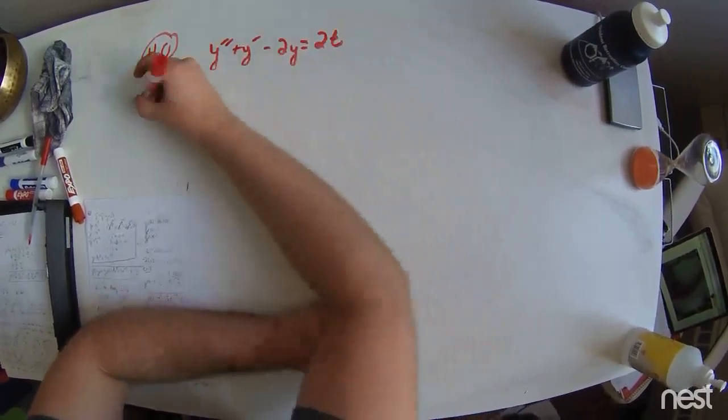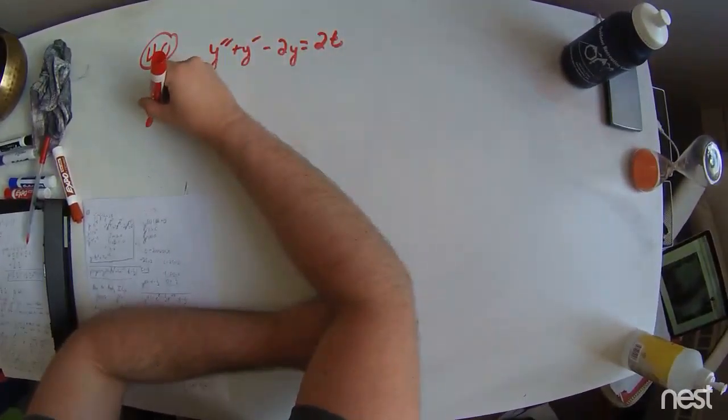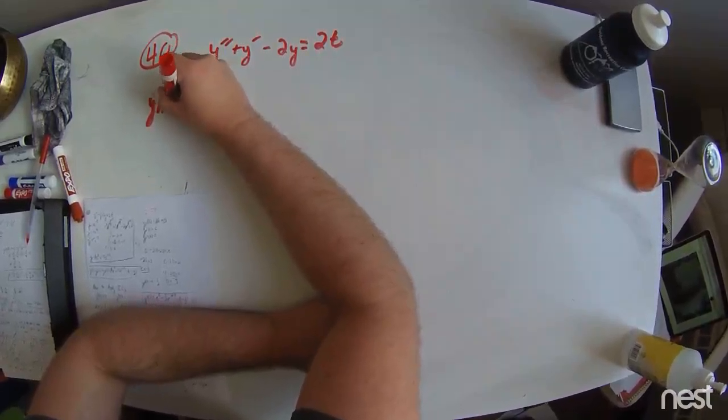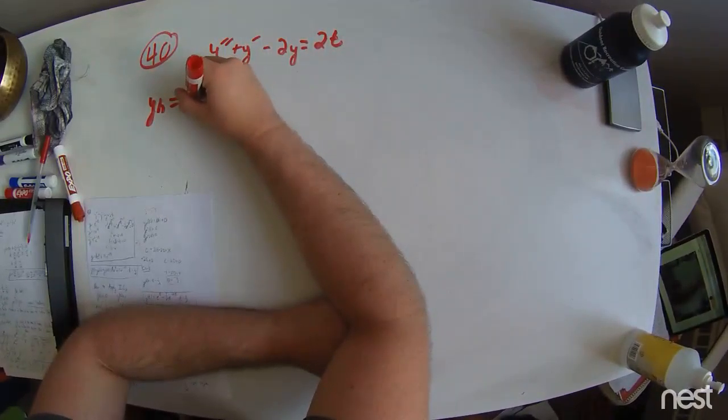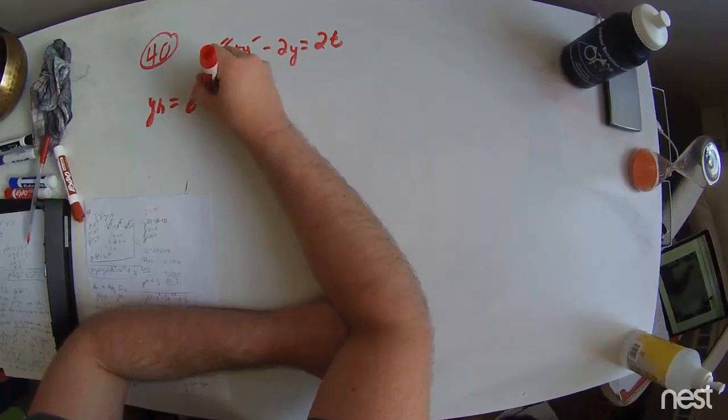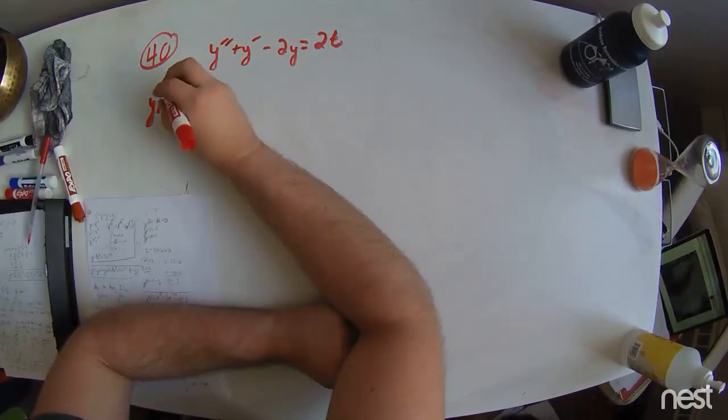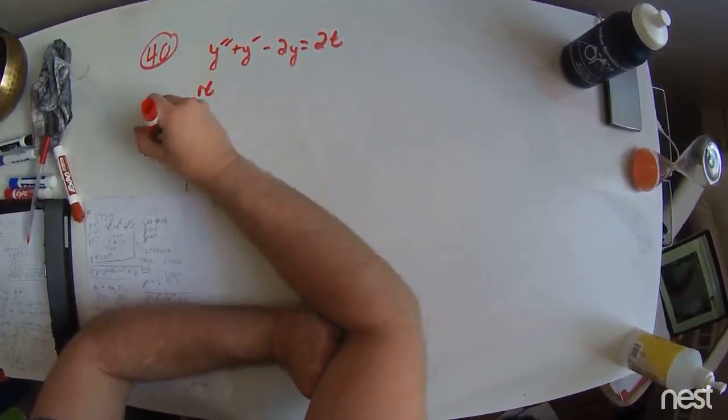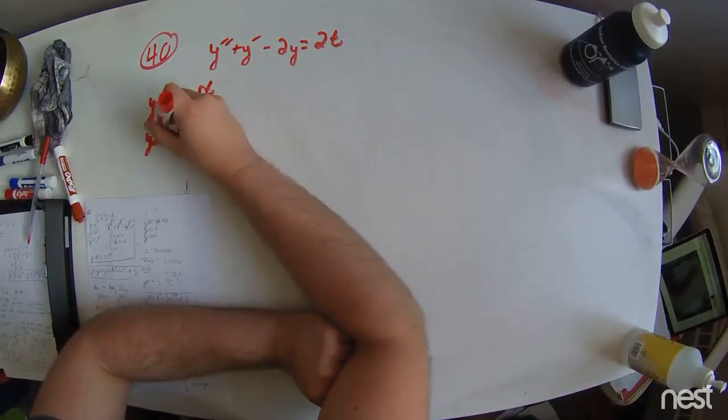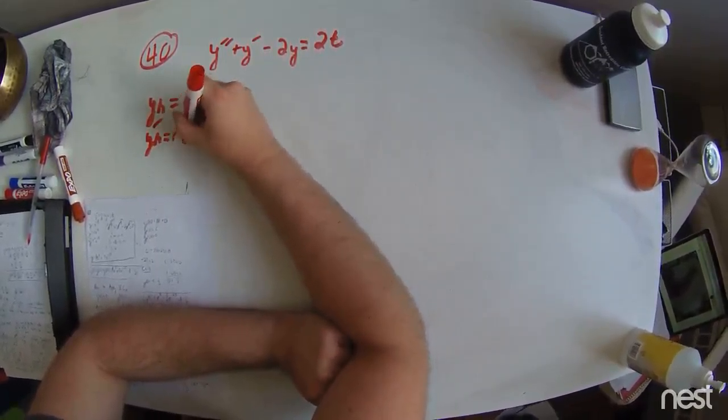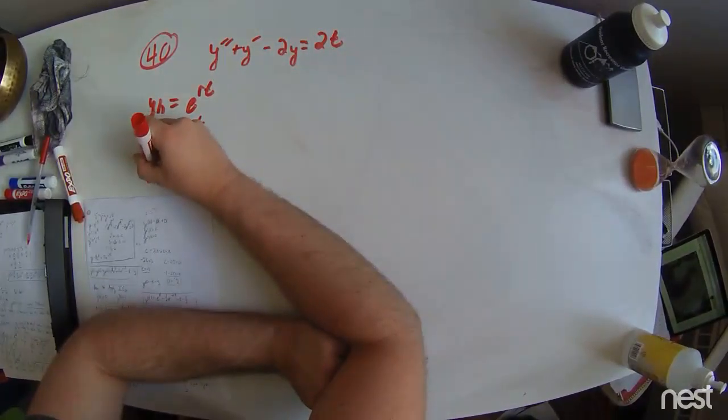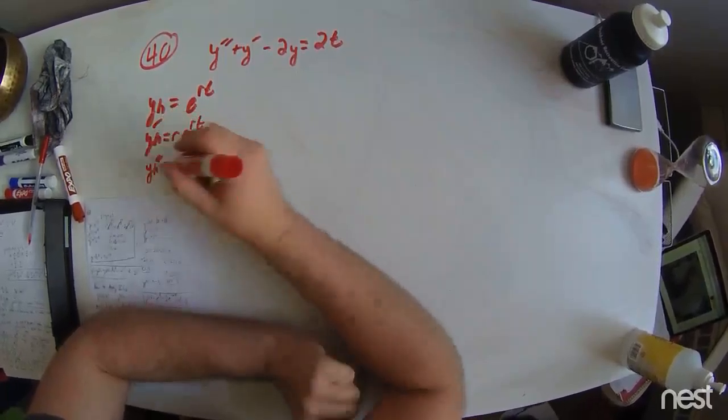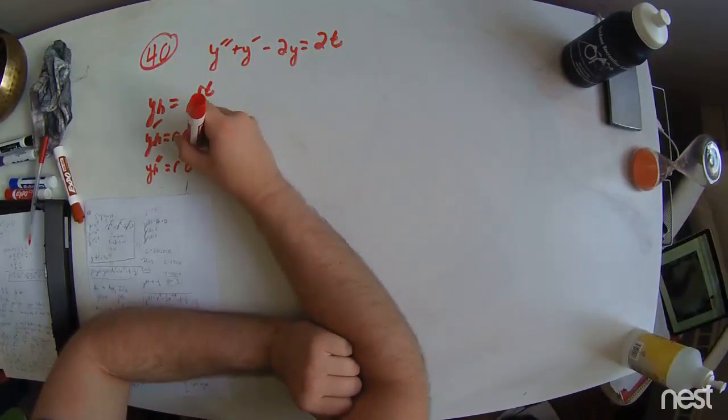Now, y homogeneous in this case can be assumed to be some e to the rt. Successive derivatives of this yields r e to the rt and y homogeneous prime equal to r squared e to the rt.